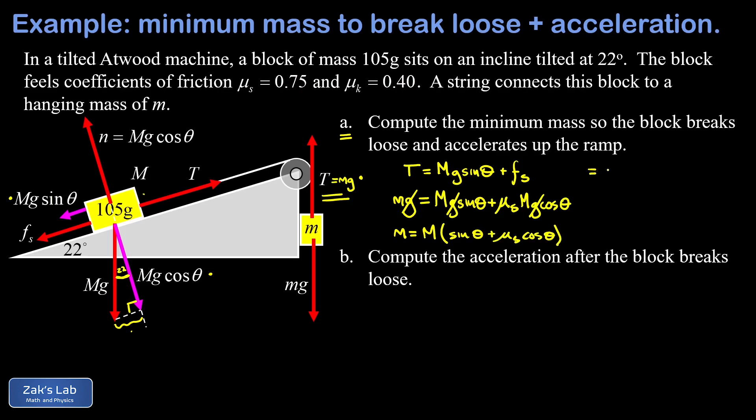So now we can plug some numbers into this. And our big M, the mass of the block, is 0.105 kilograms. Our angle is 22 degrees, so I have a sine of 22 degrees. Our static friction coefficient is 0.75, so I've got 0.75 cosine 22 degrees. And when we run the numbers on this, we get about 0.1123 kilograms for this breakaway mass.